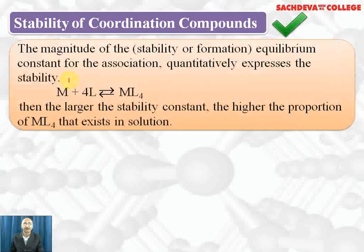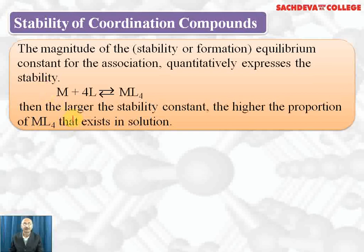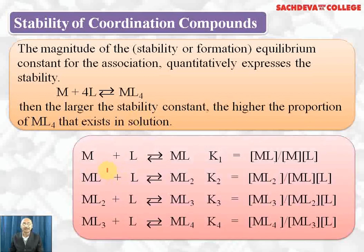The next topic is stability of coordination compounds. The magnitude of the stability or formation equilibrium constant quantitatively expresses the stability of coordination complexes. A larger value of the stability constant means a higher proportion of product formed and a more stable complex. There is also a dissociation constant, called the instability constant, which is the reciprocal of the stability constant — so a higher stability constant means a lower dissociation constant.